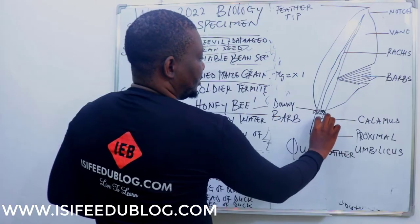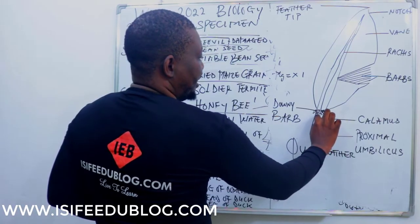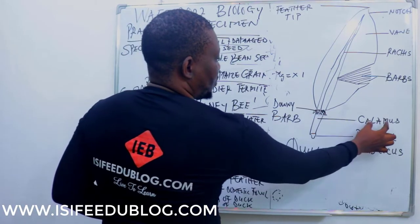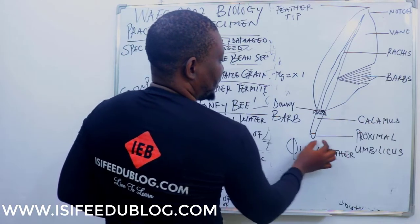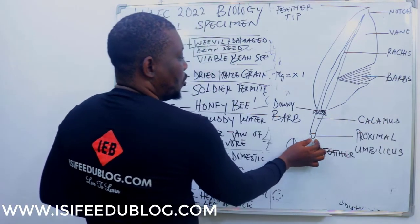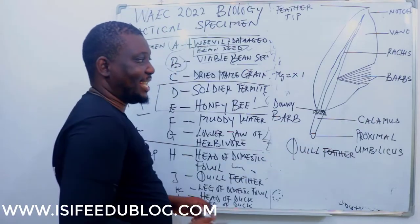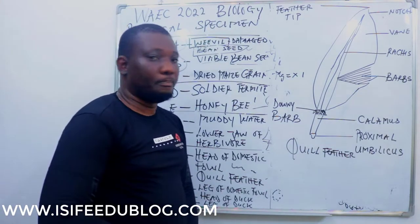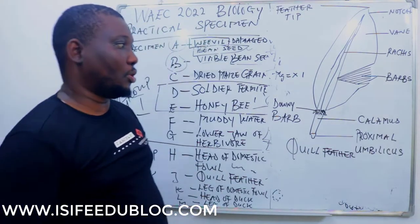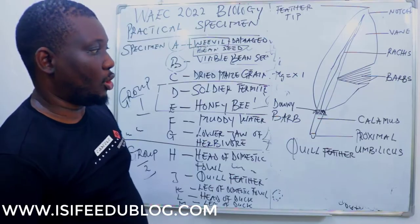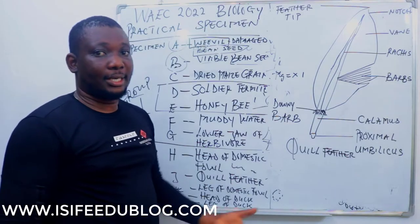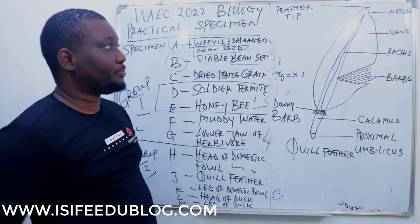The base of the downy barb is called the calamus, and the hole at the end of the feather is called the umbilicus, or proximal umbilicus, as the case may be.